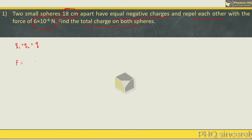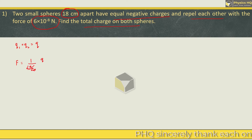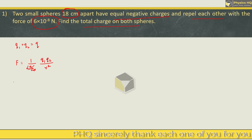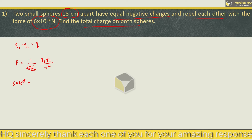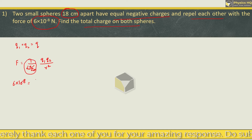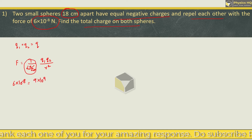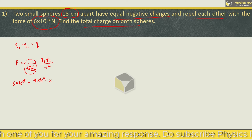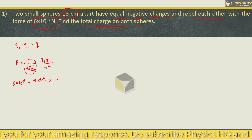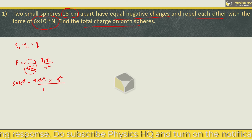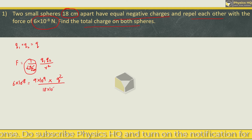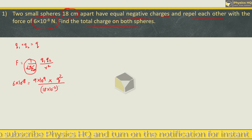The force between two charges is 1 upon 4πε₀ times Q1 Q2 divided by the square of distance between them. Force is given as 6×10⁻⁸. 1 upon 4πε₀ is 9×10⁹. If we take Q1 and Q2, then Q×Q will become Q². Divided by the distance between them, which is 18 cm, so this will be 18×10⁻² meter, squared.